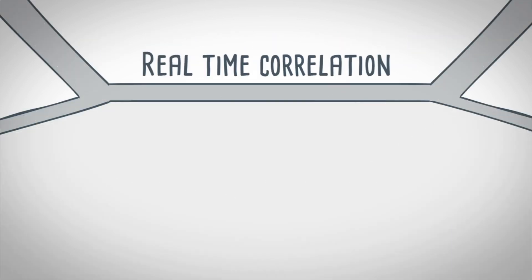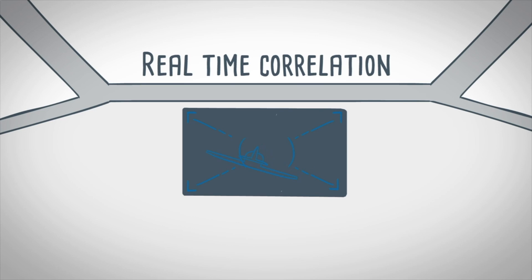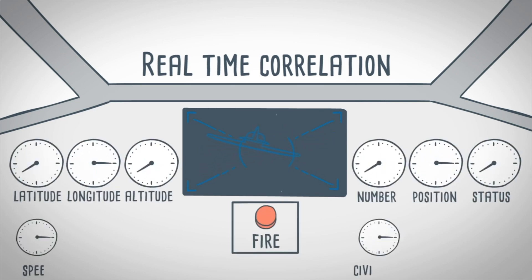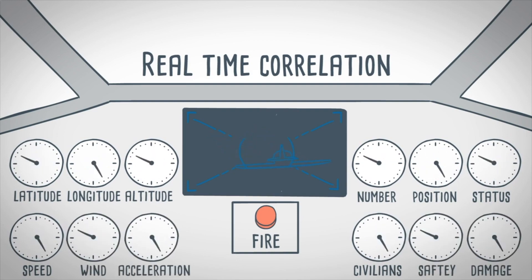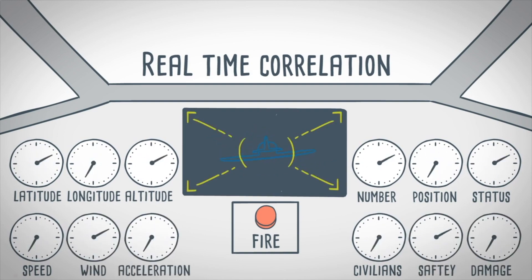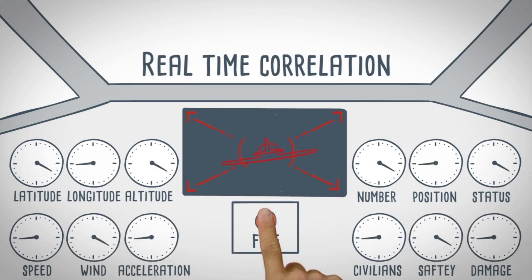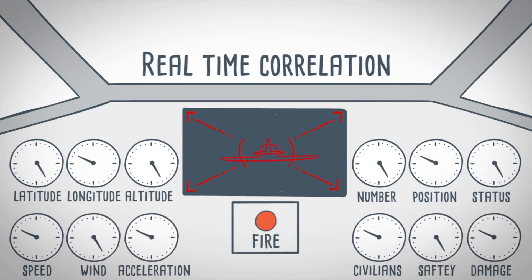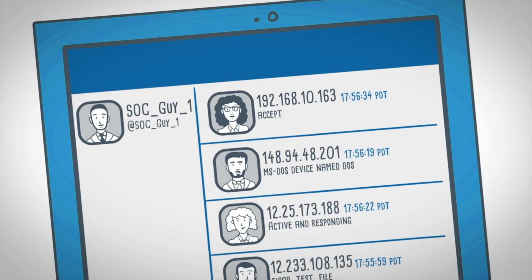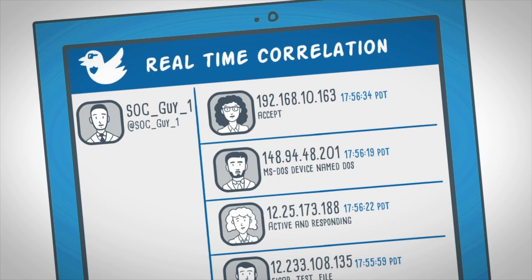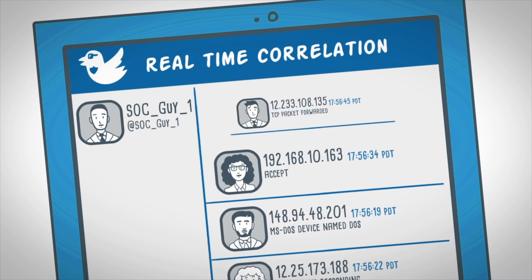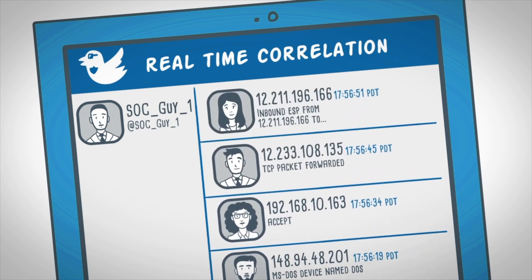Real-time correlation works a bit like the dashboard of a fighter jet. Before the pilot can fire accurately, they need to analyze the relationship between dozens of constantly changing variables to make a single decision at a precise moment. You can also picture real-time correlation like a smoothly-running news feed, always being updated to keep you informed with the latest news.